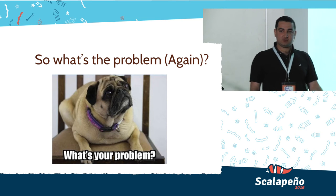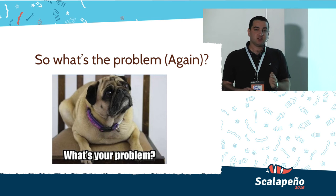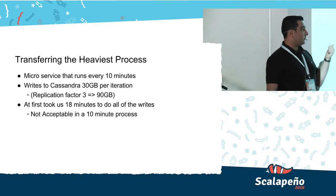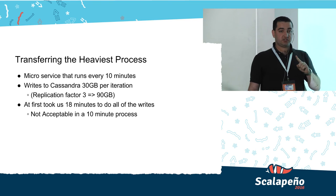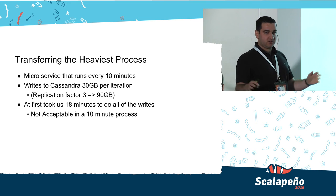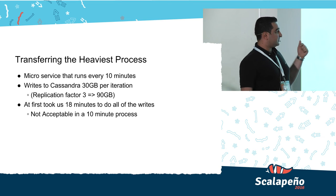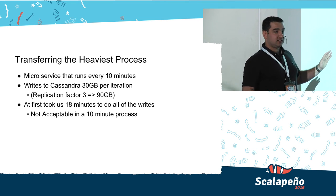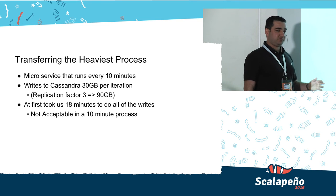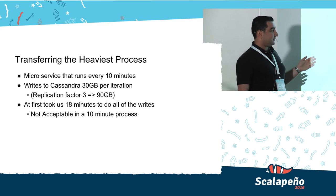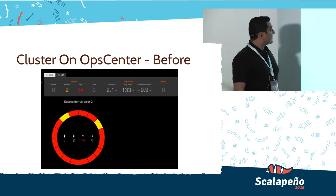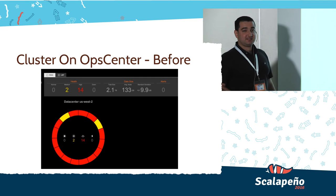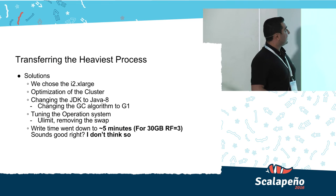But again, what's the problem? Our heaviest process was trying to read and write 30 gigabytes per iteration every 10 minutes when we upscaled and worked on all of the data. Doing replication factor three on Cassandra — which is probably the default you should use — would mean writing 90 gigabytes of data in a batch bulk, which is a lot. At first it took us 18 minutes — again unacceptable in a 10-minute process. This was how the OpsCenter looked right before everything started crashing and nodes started dying — it's a bad picture.